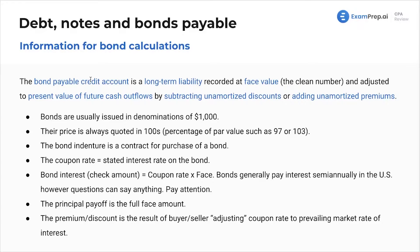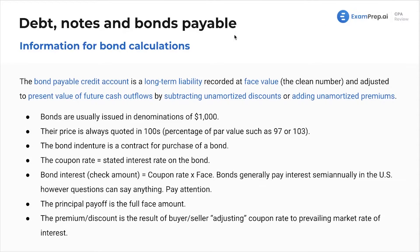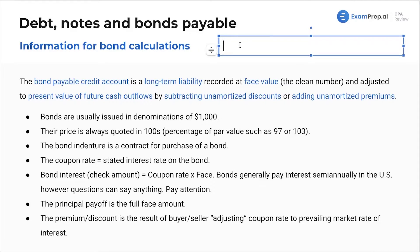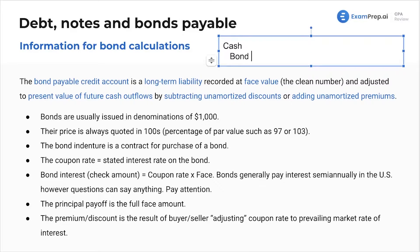We've got information about bond calculations — these are things to memorize and be familiar with. The bond payable credit account is a long-term liability. When we issue the bond, we're going to have two types of entries: the issuance — that's the cash and bonds payable — and then the amortization and the interest as time goes on. With premium or discount, that's recorded at face value.